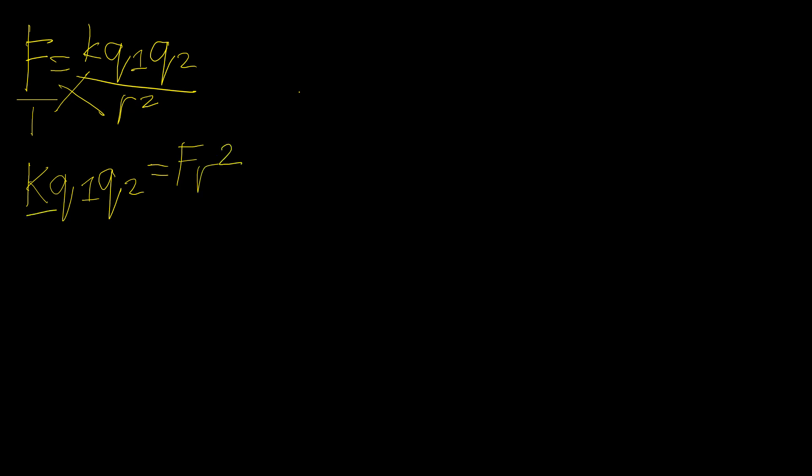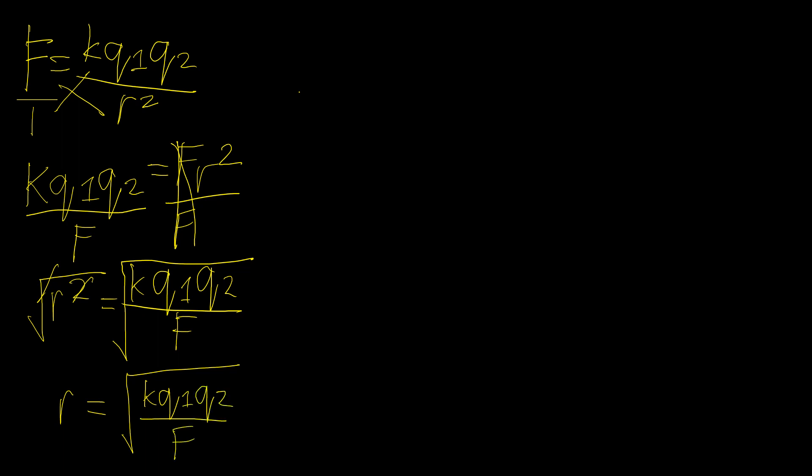Now let's divide both sides by F. We'll have R squared equals KQ1Q2 over F. Now to remove the squared, we can extract the square root of both sides. So R equals the square root of KQ1Q2 over F.